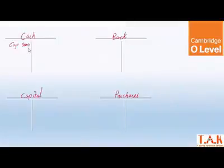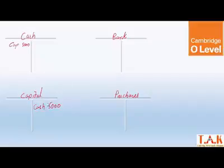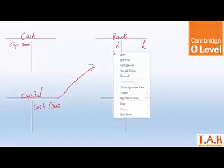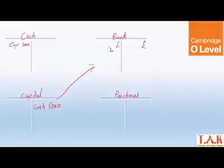First entry was: cash debit and capital credit. And out of this cash, how much was deposited into the bank? £2,000. £2,000 was deposited.